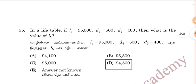Question 55: In a life table, L4 = 95,000, D4 = 500, D5 = 400. Then what is the value of L5? It is 94,500. Option D is correct.